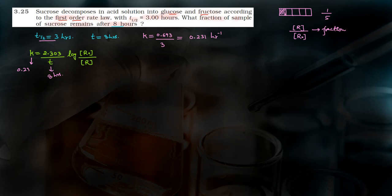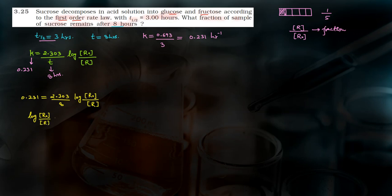k की value 0.231 आई। अब इसको equation में डालते हैं: 0.231 equals to 2.303 divided by 8, into log([R]₀/[R]). Log वाली value एक तरफ लिख लीजिए: log([R]₀/[R]) equals to 0.231 into 8 divided by 2.303.